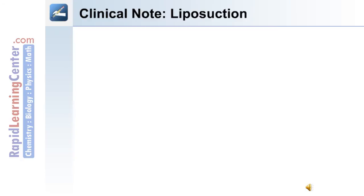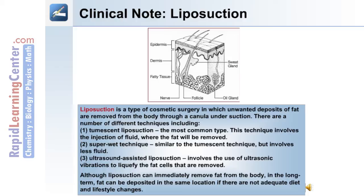The following is a clinical note on liposuction. Liposuction is a type of cosmetic surgery in which unwanted deposits of fat are removed from the body through a cannula under suction. There are a number of different techniques, including tumescent liposuction, which is the most common type and involves the injection of fluid where the fat will be removed from. The second is the super wet technique, similar to tumescent but involving less fluid. The third type is ultrasound-assisted liposuction, which involves the use of ultrasonic vibrations to liquefy the fat cells that are then removed. Although liposuction can immediately remove fat from the body, in the long term fat can be deposited in the same location if there are not adequate diet and lifestyle changes.